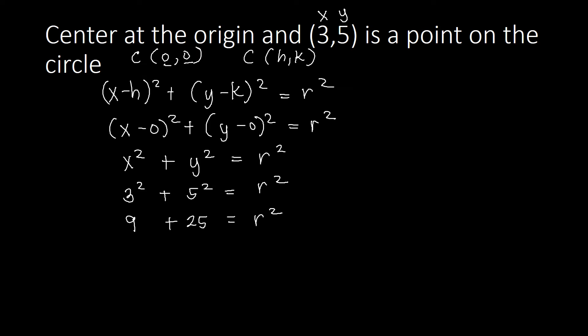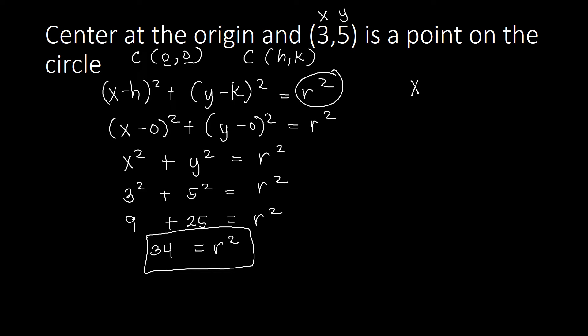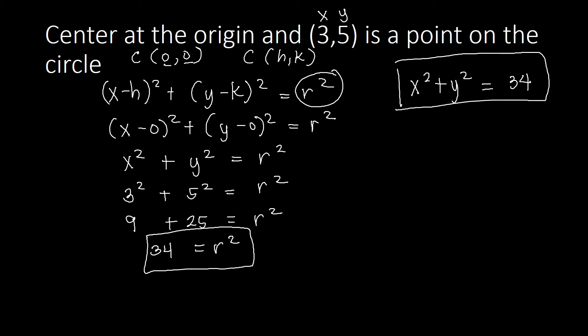That gives us r squared equals 34. There's no need to take the square root since the standard equation uses r squared directly. Plugging in r squared equals 34, our final standard equation is x squared plus y squared equals 34. This is the standard equation of the circle with center at the origin and point (3, 5) on the circle.